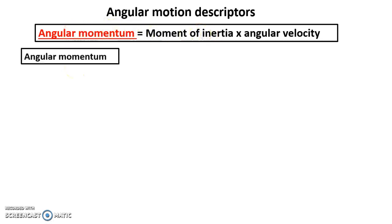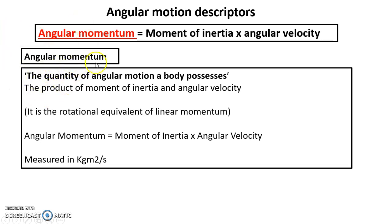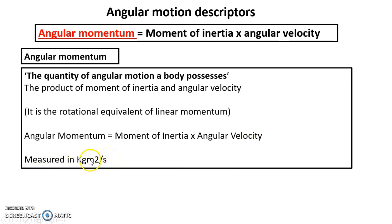So angular momentum — if you remember momentum, we looked at the quantity of motion in linear motion. Now we're just simply putting angular in front of it: the quantity of angular motion a body possesses. That is all you have to know and all you're going to be asked to define. Obviously we know it's the product of moment of inertia and angular velocity. It's also the rotational equivalent of linear momentum. Angular momentum equals moment of inertia times angular velocity, and it is measured in kilogram meters squared per second.